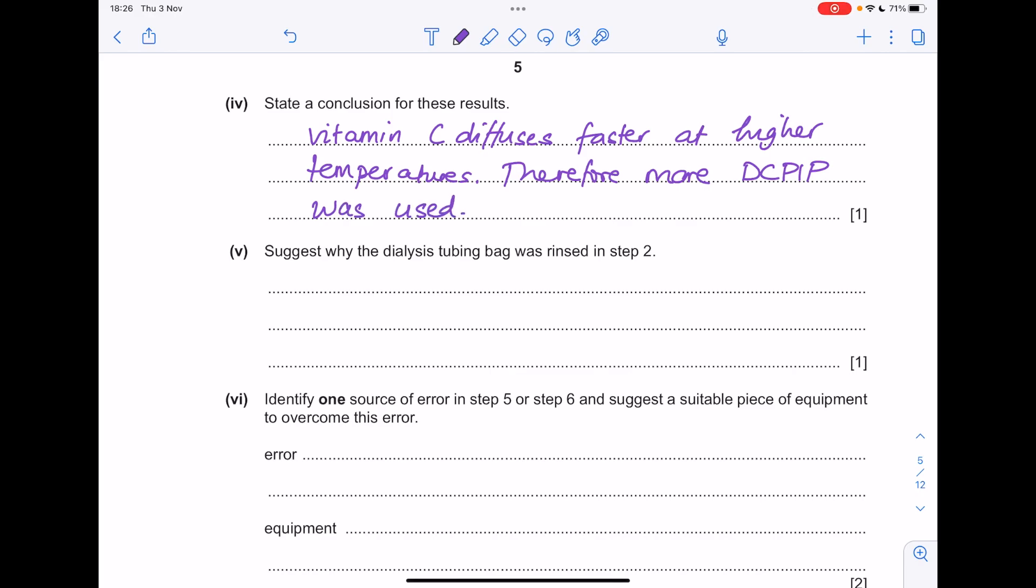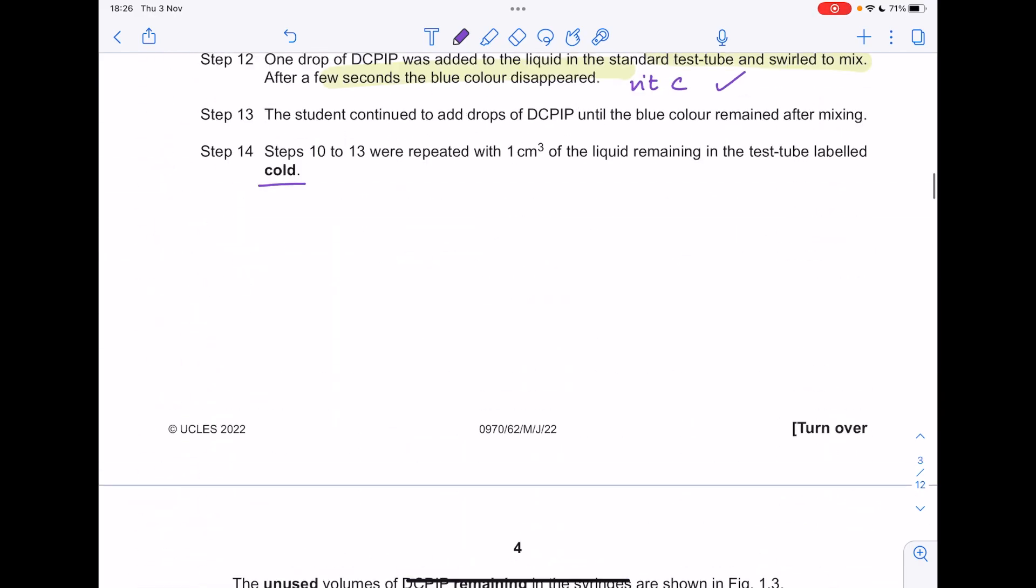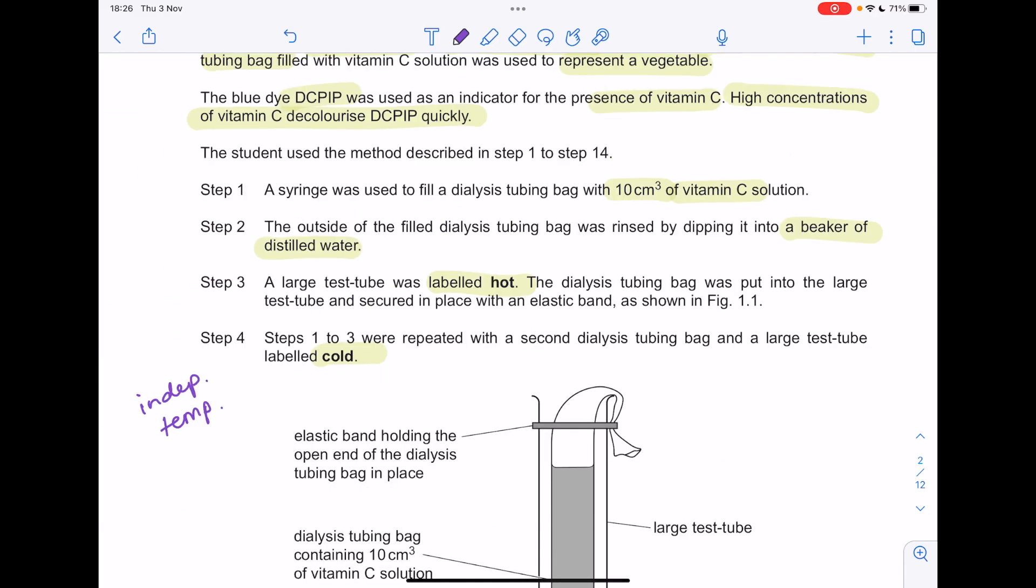Suggest why the dialysis tubing bag was rinsed in step 2. That's in order to ensure that there's no contamination by vitamin C, or to remove any vitamin C that's stuck to the outside of the tubing.